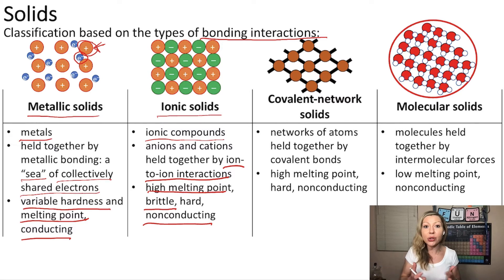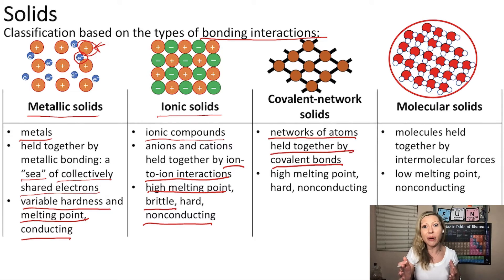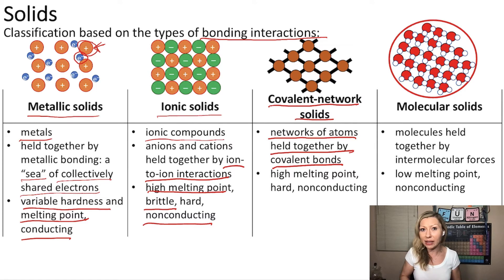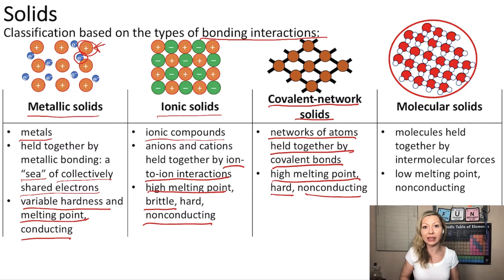What happens when we have atoms? Well, if we have a network of atoms held together by covalent bonds, we are going to produce so-called covalent network solids. These are solids made of carbon or silicon. We'll talk about these in more detail on the next slide. These solids have high melting points, they are hard, and they do not conduct electricity.